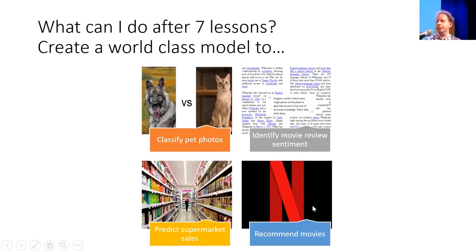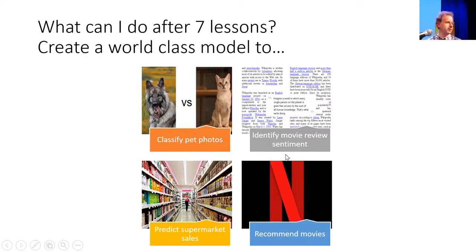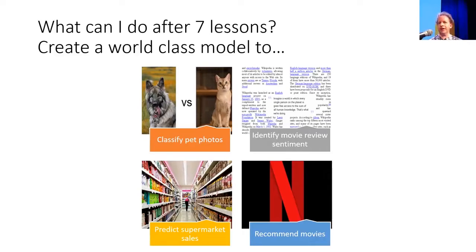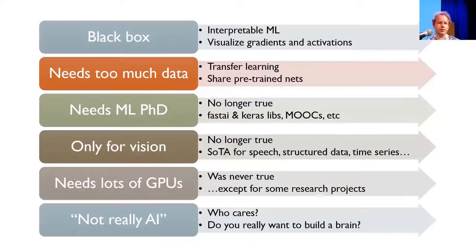If you follow along with about ten hours a week for seven weeks, by the end you will be able to build an image classification model on pictures you choose at a world-class level, classify text, make predictions for commercial applications like sales, and build recommendation systems like the one used by Netflix — not toy examples, but things that can come top ten in Kaggle competitions and beat everything in the academic community.